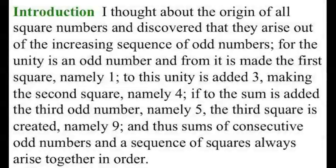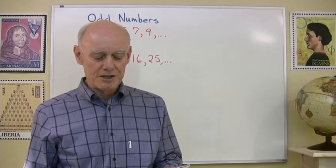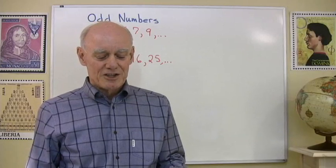To this unity is added three, making the second square, namely four. If to the sum is added a third odd number, namely five, the third square is created. And thus sums of consecutive odd numbers and a sequence of squares always arise together in order.